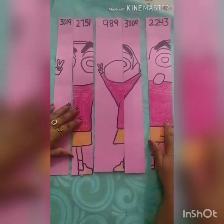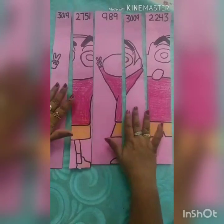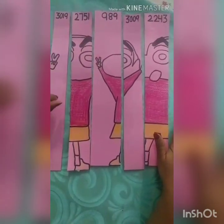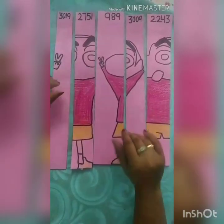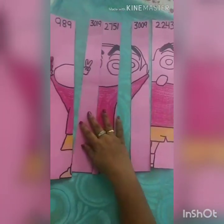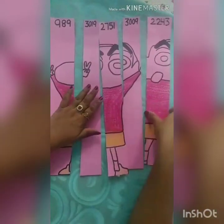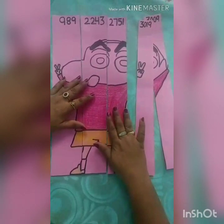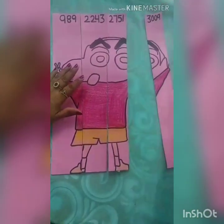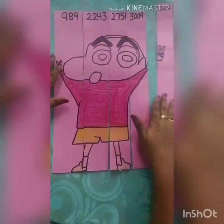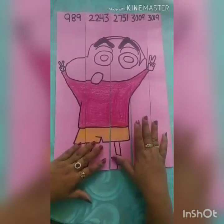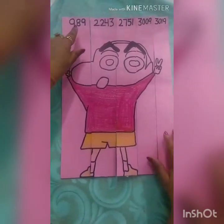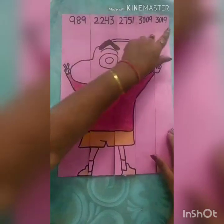Now I have a fun activity for you all. I have some strips with numbers written on the top of each strip. If you arrange these numbers in ascending order, you will get a picture of your favorite cartoon. Arranging them in ascending order: 989, then 2,243, then 2,751, then 3,009, and last is 3,019. And there it is — it is Shin-chan! These numbers are arranged in ascending order from the smallest to the greatest.